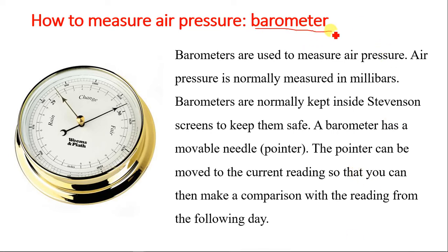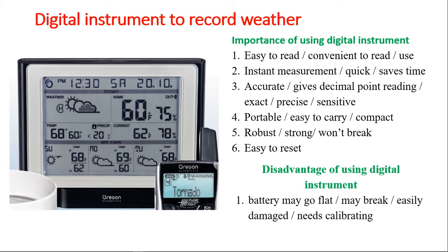Air pressure is measured using an instrument called a barometer. Barometers are kept inside a Stevenson Screen to keep them safe. Air pressure is normally measured in millibars. A barometer has a movable needle or pointer that can be moved to the current reading so you can make a comparison with the reading from the following day. You take your reading in millibars. Because of improvements in technology, there are now digital instruments that can give you most of these data in just one simple instrument.